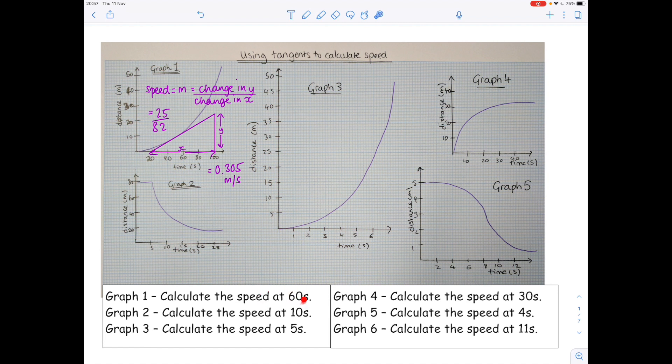So that's the answer to the first question. What about the second one? Calculate the speed at 10 seconds. So let's put a little dot again. Then we need to draw that tangent. Let's turn it into a triangle now.